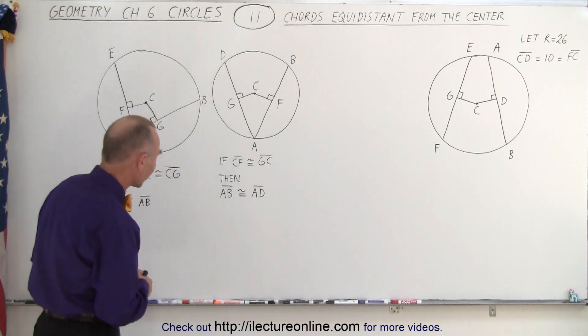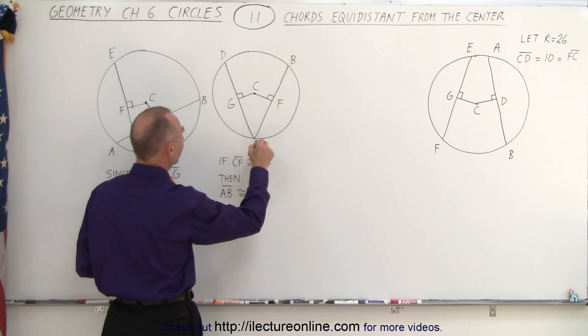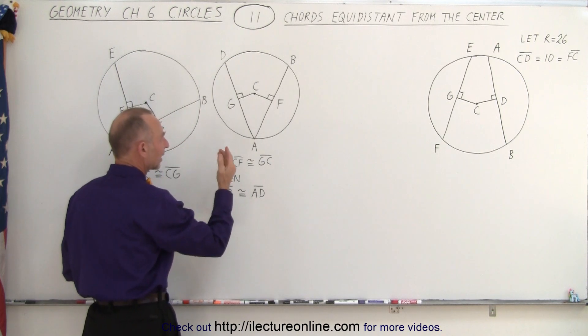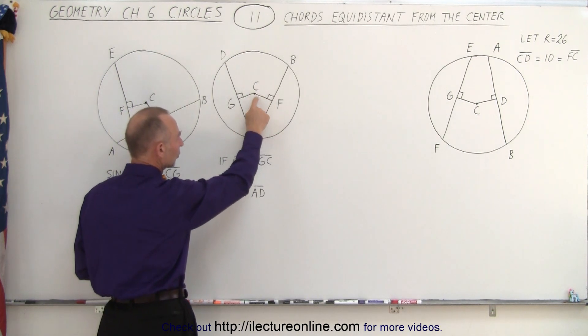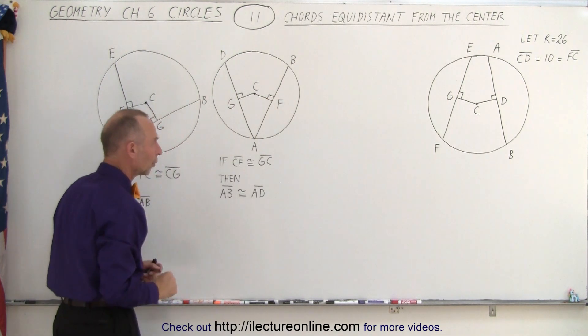So first let's go to the left side of the board here and take a look. Notice that we have two chords, one going from A to B, the other one going from A to D. Notice that they're equidistant away from the center. In order to find that line that goes from the chord to the center, we want to find a line that hits the chord perpendicular to the chord.